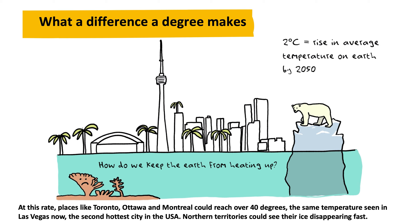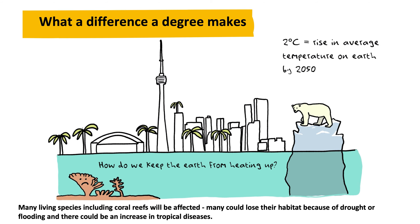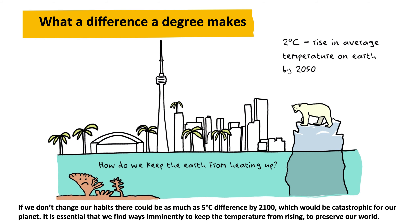Northern territories could see their ice disappearing fast. Many living species, including coral reefs, will be affected. Many could lose their habitat because of drought or flooding, and there could be an increase in tropical diseases. If we don't change our habits, there could be as much as 5 degrees Celsius difference by 2100, which would be catastrophic for our planet. It is essential that we find ways imminently to keep the temperature from rising, to preserve our world.